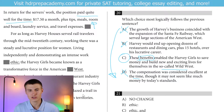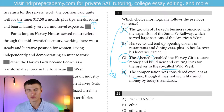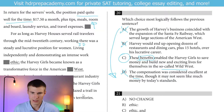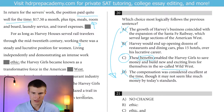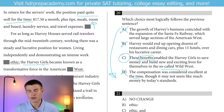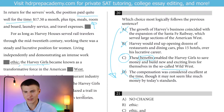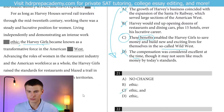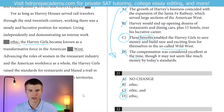For as long as Harvey served rail travelers through the mid-20th century, working there was a steady and lucrative position for women — 'living independently and demonstrating an intense work ethic.' That right there is an introductory modifying phrase that is ultimately modifying the Harvey Girls. If you have an introductory modifying phrase, you offset it with a comma, not a semicolon. So we have to have that comma after 'ethic.' We don't need 'and' — right after that comma, we want the subject it's modifying, which is 'the Harvey Girls.' Our answer there would be D for question 21.